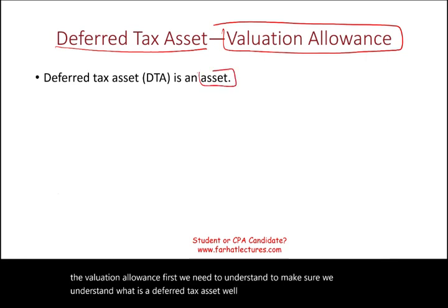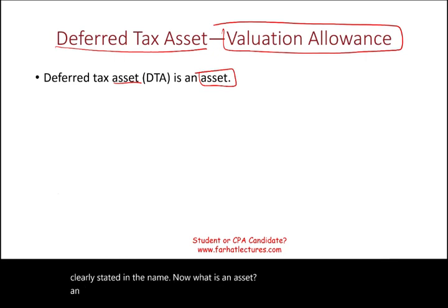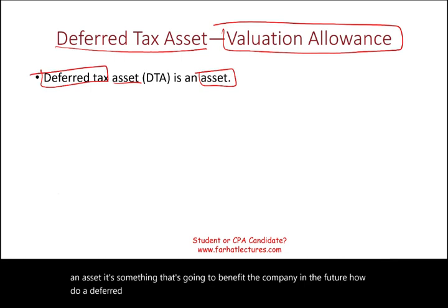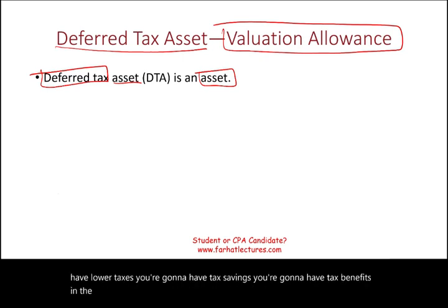The deferred tax asset is an asset — it's clearly stated in the name. An asset is something that's going to benefit the company in the future. A deferred tax asset benefits the company in the future because you're going to have lower taxes, tax savings, and tax benefits in the future as a result of a temporary difference.